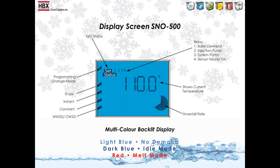We can see the user interface and which relays are on. We can see the current temperature, the snowfall rate, and whether warm weather or cold weather shutdown is on or off. The multicolor backlit display is one of the key features of the Snow 500. Depending on which mode of operation is selected, the screen will change to indicate the status of the system. Light blue means no demand, red is in melt mode, and dark blue is in idle mode.